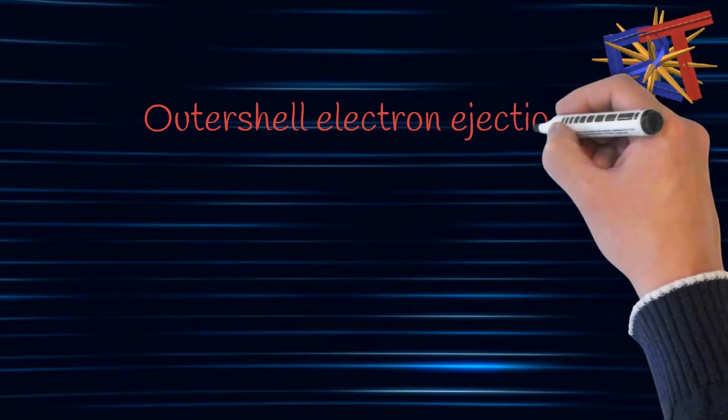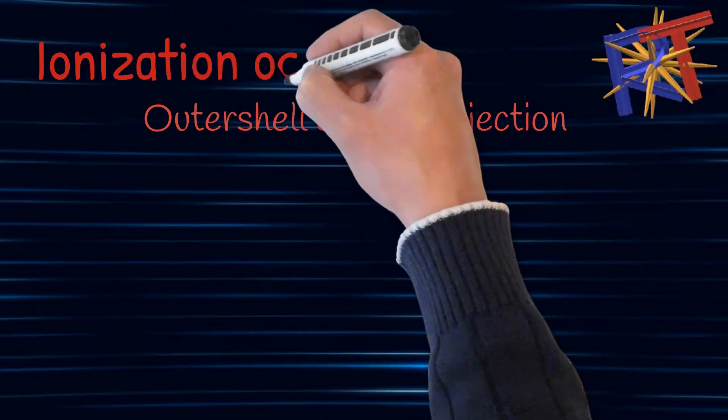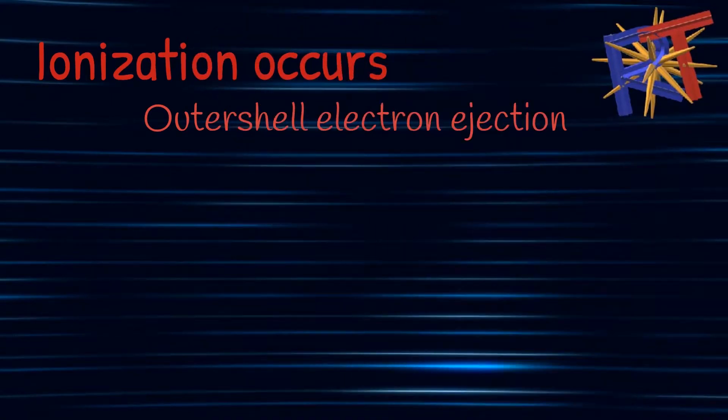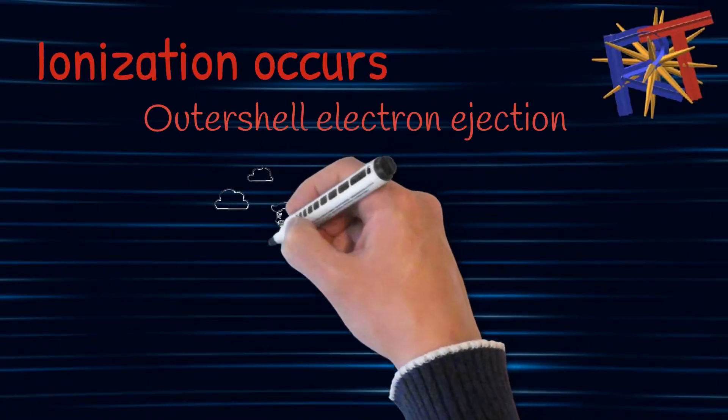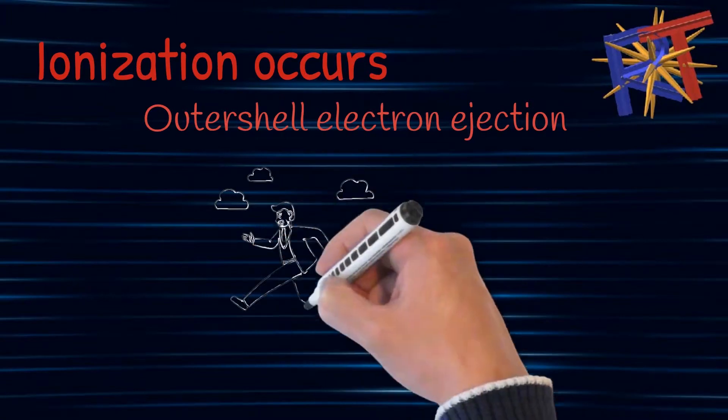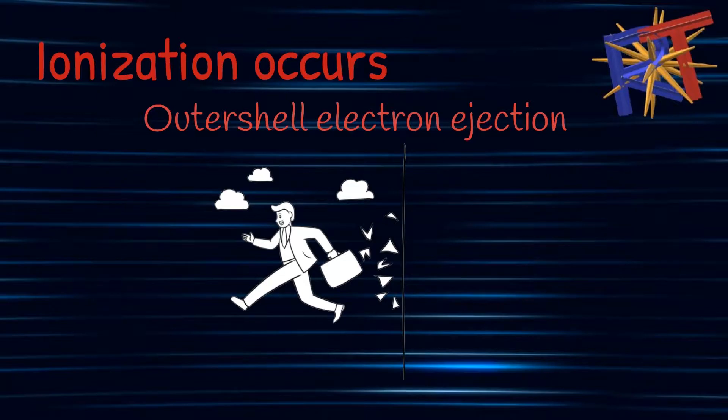Once this happens, once that electron gains the energy of some of that x-ray photon, it will then be knocked out of its orbit, which leaves that atom unstable because it lost one of its electrons. It wants all of its electrons and now it lost one. So that's what we call ionization when the atom does not have all of its electrons and that makes it unstable.